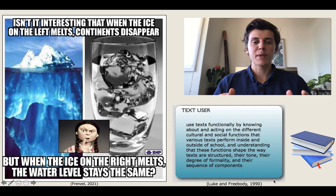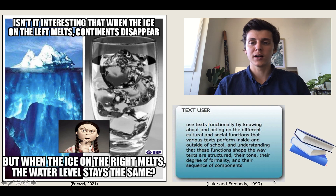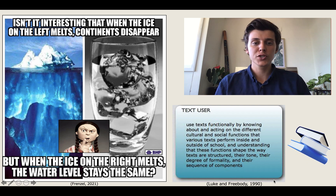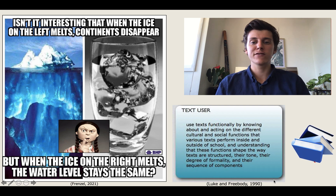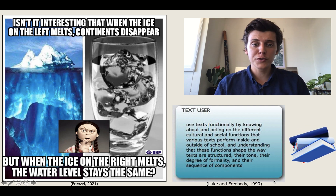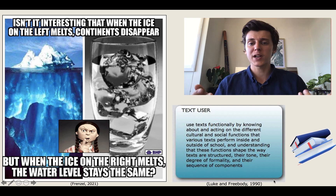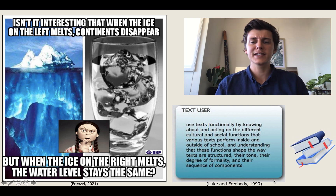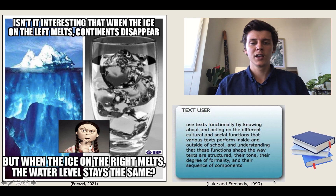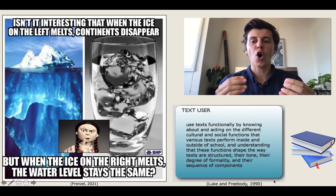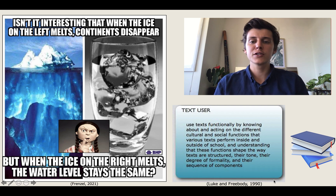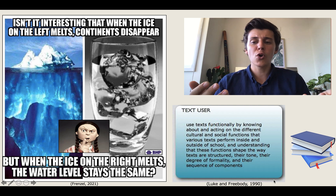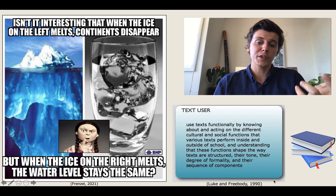The final domain of Luke and Freebody's model is text user. This domain asks the students to reflect on how they should use the information they have obtained from this text. Can the author's desired reading of the text be trusted and how has the text affected the students' views surrounding the issue? Creating a pros and cons list with the whole class would be a great teaching strategy to employ here. Once it is clear to the students that the authors have a conflict of interest with the messaging of the text, they can deem that BHP is an unreliable arbitrator of truth on the issue of climate change.